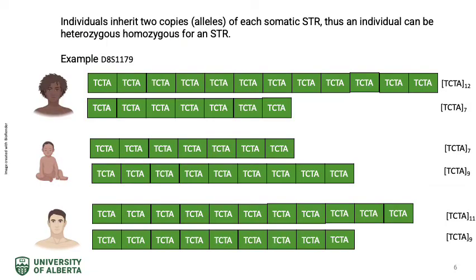Humans have two copies of each somatic chromosome, and subsequently they will have two copies of each somatic STR. Typically, the STRs selected for identification studies and aneuploidy studies are highly heterogeneous. However, it is possible for an individual to be homozygous for an STR.